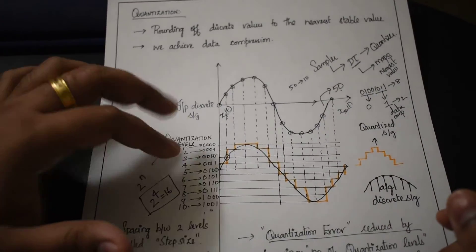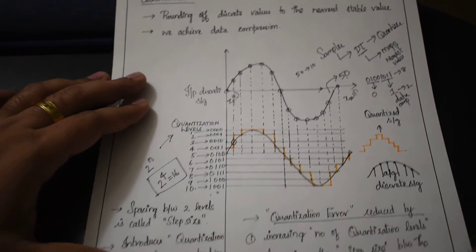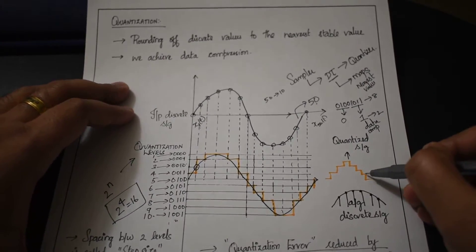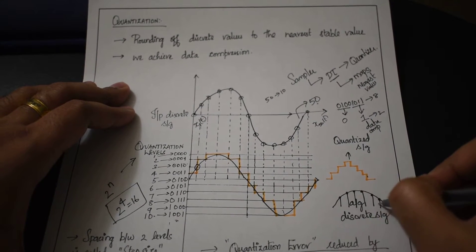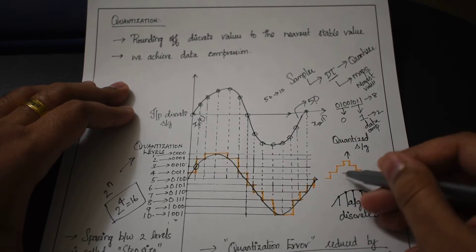This is how a discrete signal's envelope looks, and this is how a quantized signal looks.